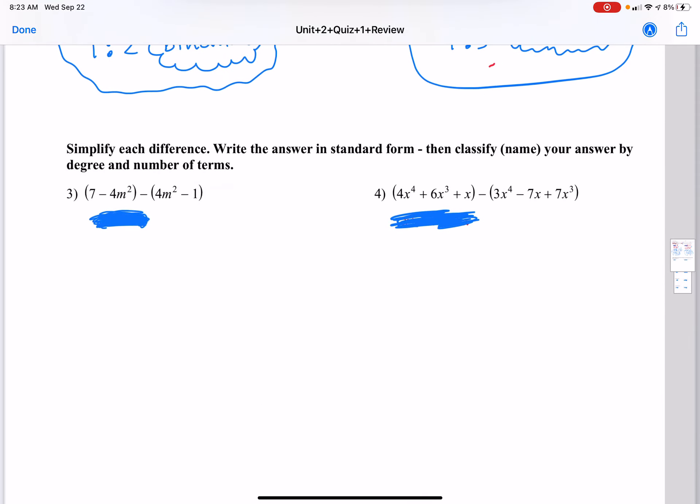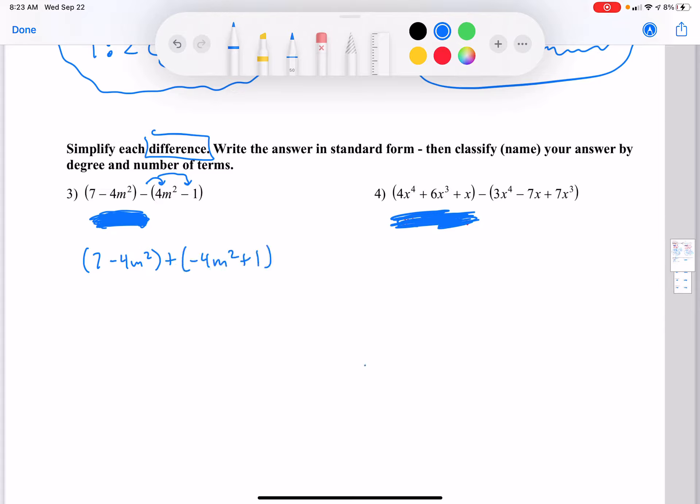So that was the sum. Now we're going to do the same thing. We're going to simplify the difference. All we're going to do though is we're going to change the signs and make it a sum. So it says difference right here. Well, we're going to change it to an addition statement. 7 minus 4m squared plus negative 4m squared plus 1.